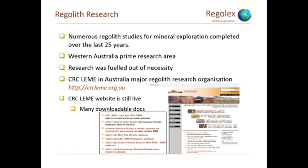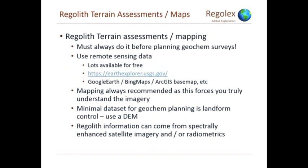The next topic I want to talk about is regolith terrain assessments and producing maps. You don't necessarily have to produce a map, but when you map, you're forced to understand the imagery. You can't draw the lines without understanding that someone might drive out and check your map, so you tend to understand it a little bit better. There's lots of remote sensing — I always do it before I plan a geochemical survey. It won't always produce a map, but at least do the assessment. There's lots of free data out there.